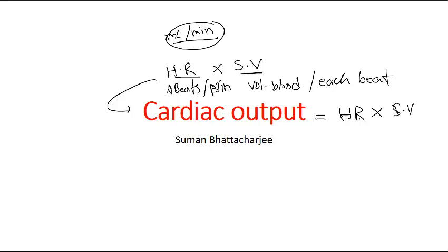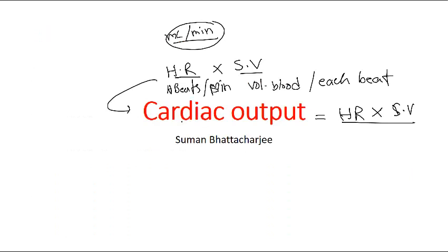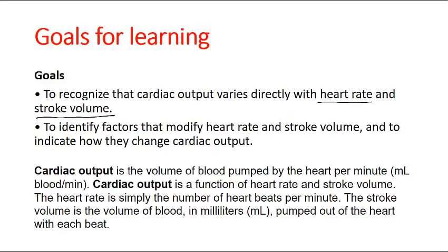Our learning goals are to recognize that cardiac output varies directly with heart rate and stroke volume, to identify the factors that modify heart rate and stroke volume, and to know how cardiac output is regulated. Cardiac output can vary for different people and different situations — for example, if you are exercising, relaxing, or sleeping, the cardiac output may be different.